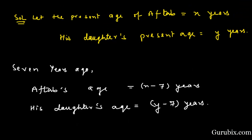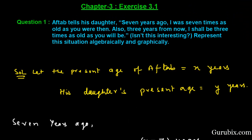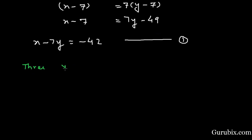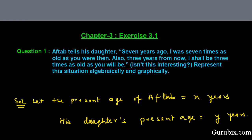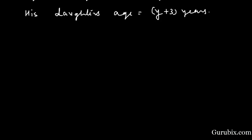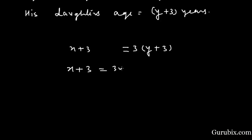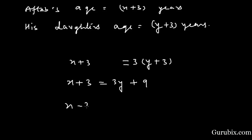Now we shall find the ages of both Aftab and his daughter three years from now. Three years from now, Aftab's age is x plus 3 years and his daughter's age is y plus 3 years. The condition is: I shall be three times as old as you will be. So x plus 3 equals 3(y plus 3), which gives x minus 3y equals 6. This is our Equation 2.